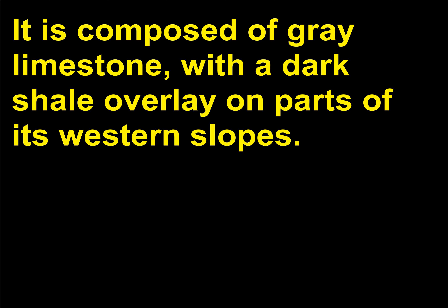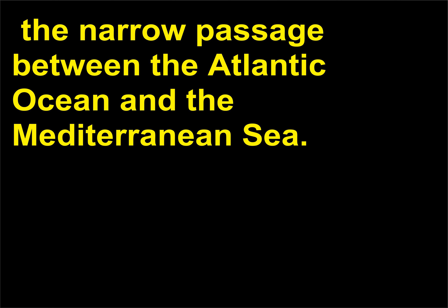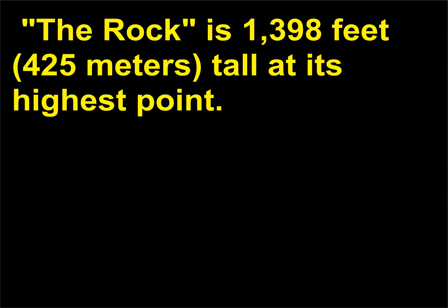The Rock of Gibraltar is composed of grey limestone with a dark shale overlay on parts of its western slopes. Located on a peninsula at the southern extremity of Spain, it is a mountain at the east end of the Strait of Gibraltar — the narrow passage between the Atlantic Ocean and the Mediterranean Sea. The rock is 1,398 feet (425 meters) tall at its highest point.